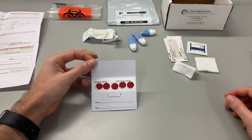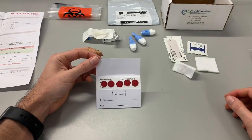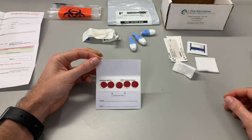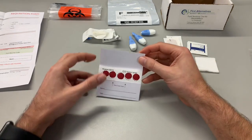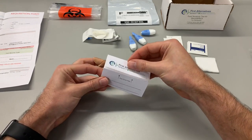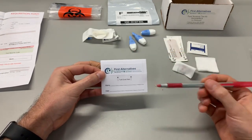Let the protein saver card sit for 30 minutes to allow time for your blood sample to dry. After 30 minutes, close the flap and make sure your name and date of collection is written on the card.